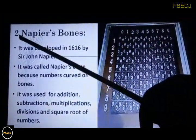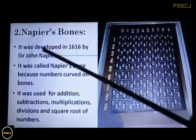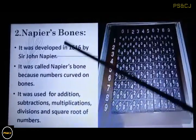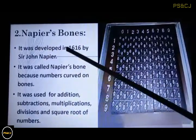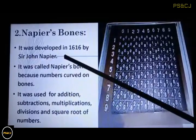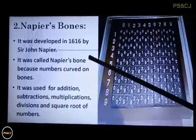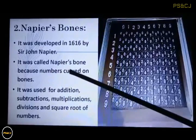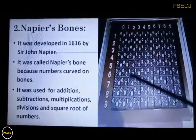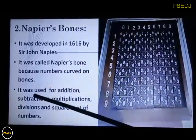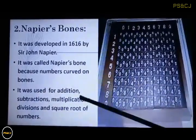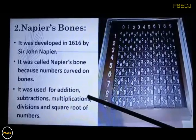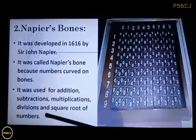The second is Neper's Bones. It was developed in 1616 by Sir John Neper. You have to learn this date as well as the name: 1616, by Sir John Neper. It was called Neper's Bone because numerical numbers are carved on bones and wooden sticks. It was used for mathematical sums — addition, subtraction, multiplication, division, and to find the square root of numbers.